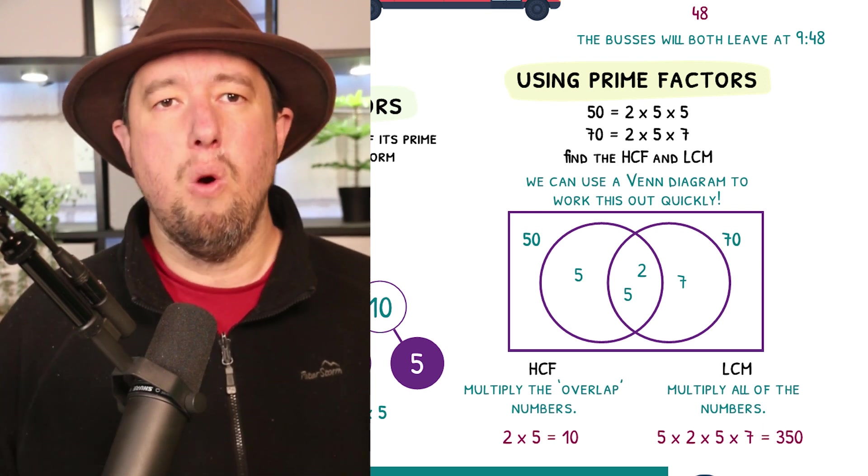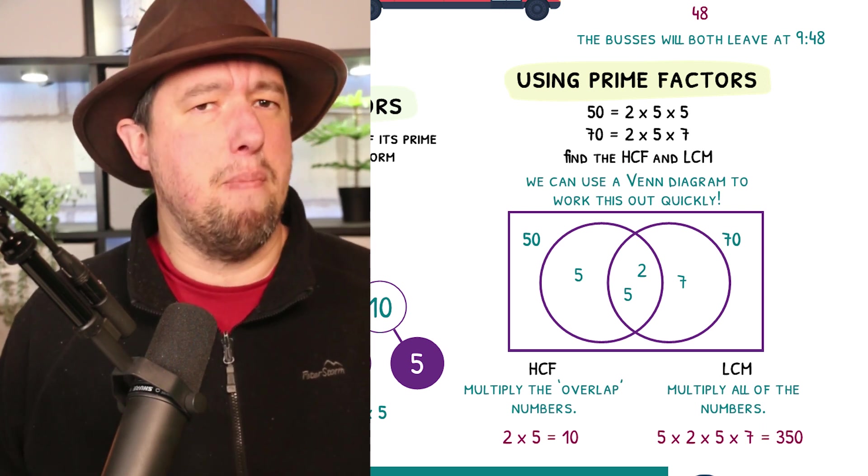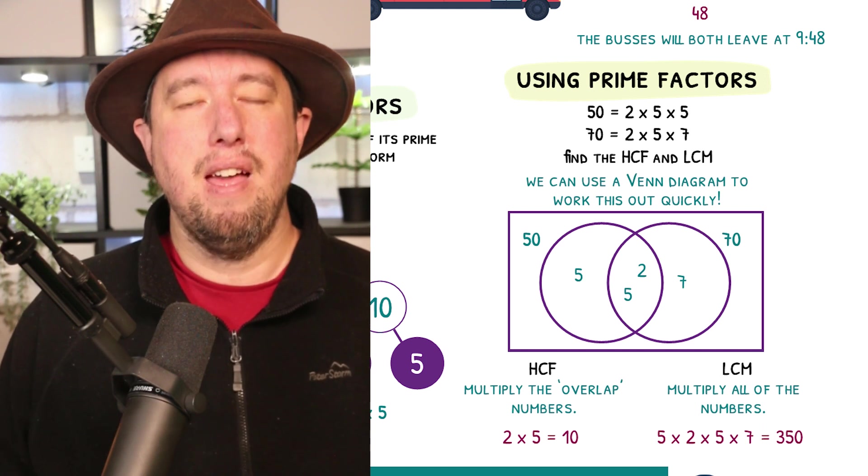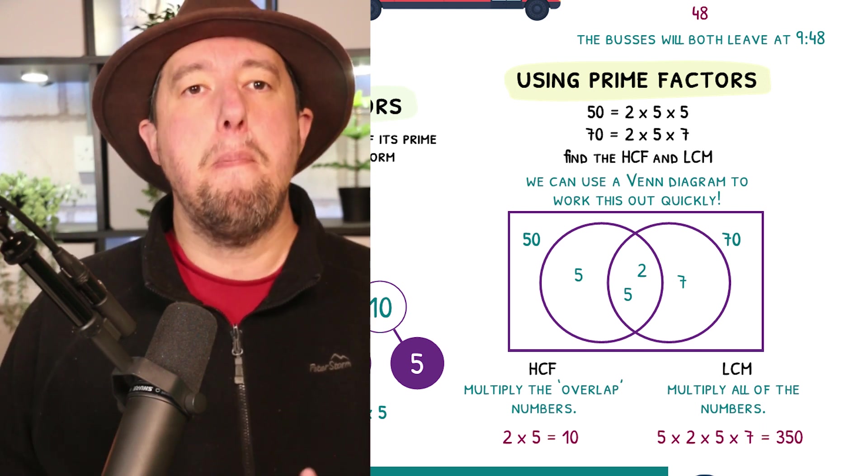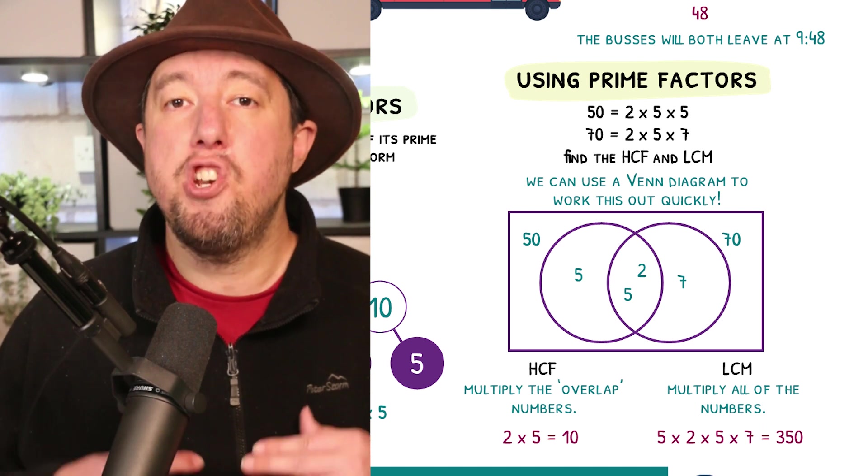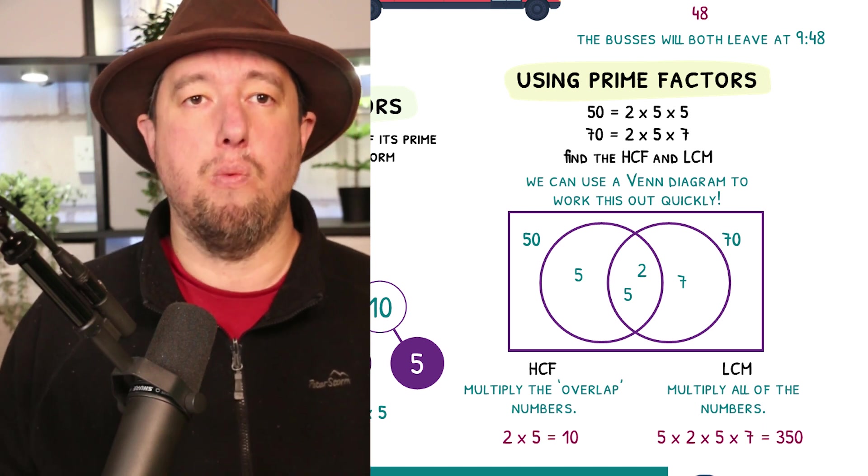A student once asked me, why doesn't this just give us the same number as 50 times 70? And it does for some numbers. But don't forget, with the Venn diagram, if they both share a number, we only wrote it once.